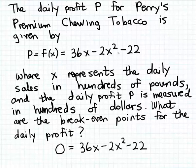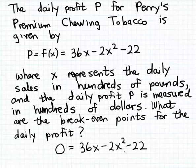Since this is a quadratic function — because the input variable is squared in the formula — the resulting equation we get by setting the profit to zero is a quadratic equation. We have to use our knowledge of solving quadratic equations, and the solutions to this equation will be the break-even points for the daily profit.